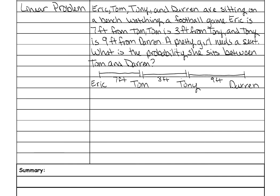Then you need to take into account what it's asking or what the situation they're asking for is. And it says what's the probability she sits between Tom and Darren. Then you need to figure out how long that is. So between Tom and Tony is three feet and between Tony and Darren is nine feet. So you'll add those two together to get twelve feet.